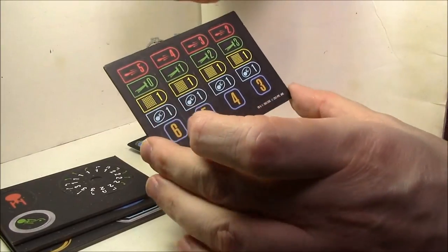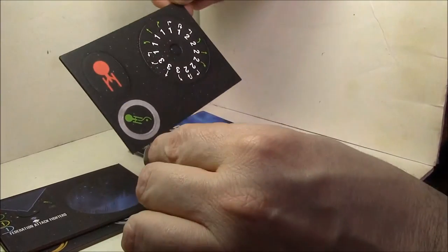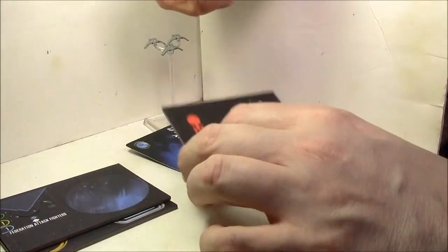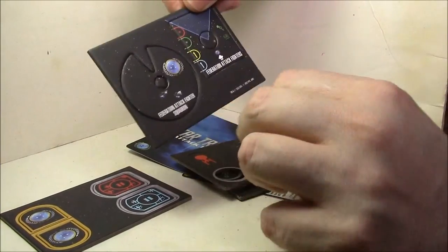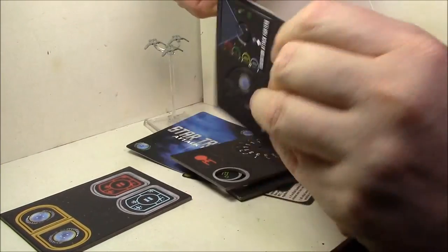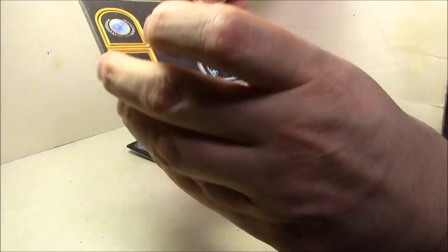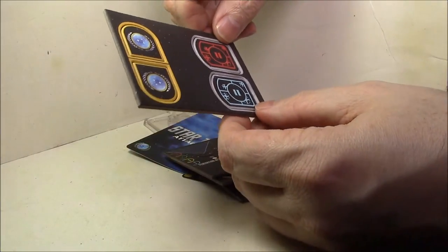A maneuver dial, shield with one shield token, evade. Okay, just a standard 90-degree firing arc. Federation Attack Fighters—again, you got target lock. I don't know what those are, double bars.